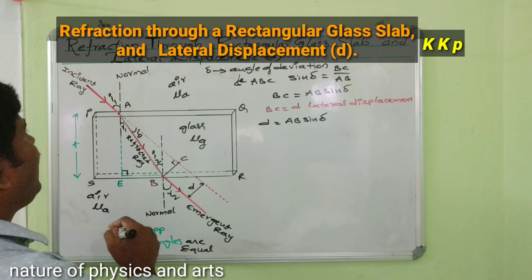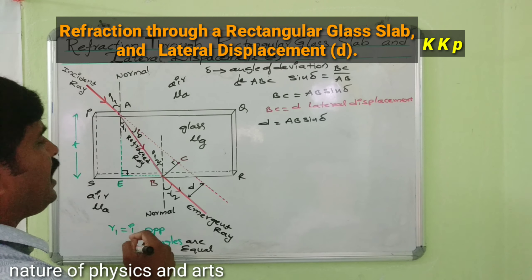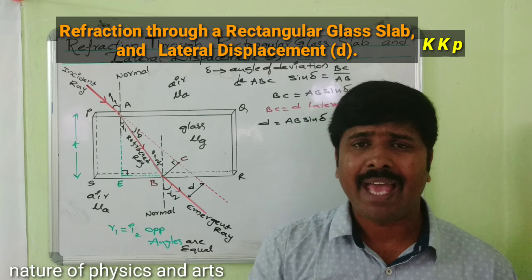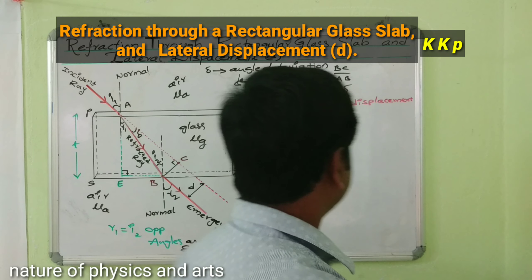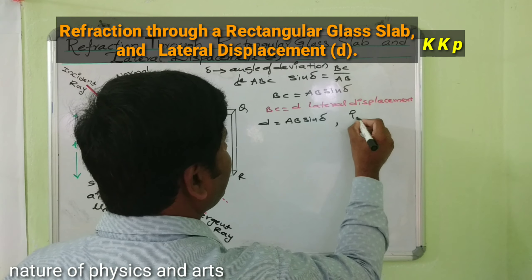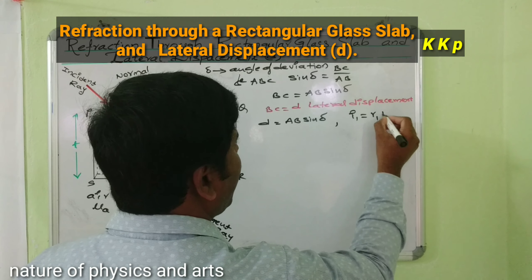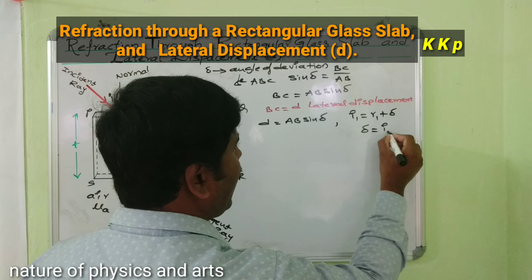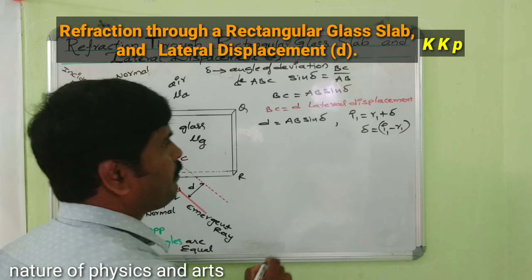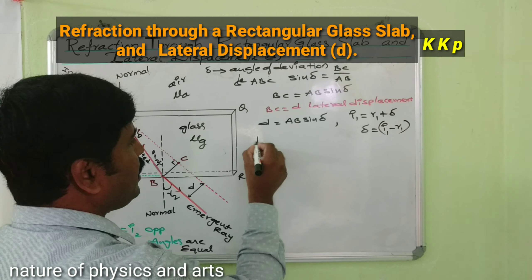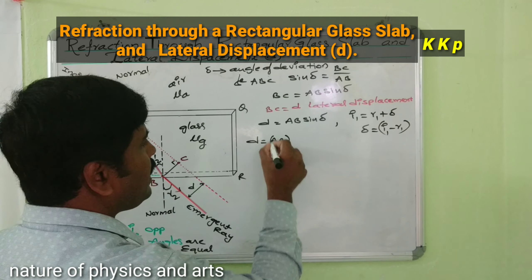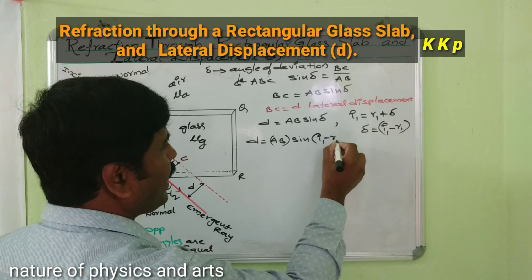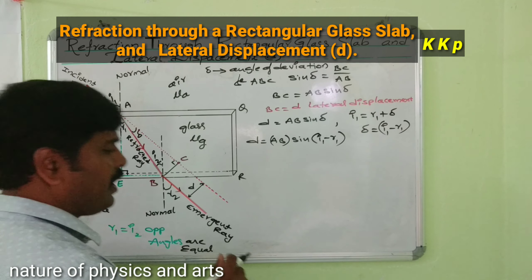From the incident ray, the angle of incidence i1 equals r1 + delta, because of opposite angles being equal. From this equation: delta = i1 - r1. Substituting back: d = AB · sin(i1 - r1).